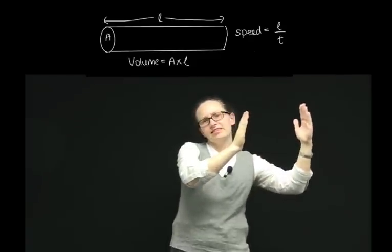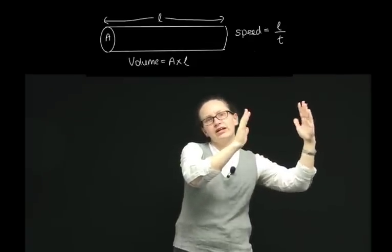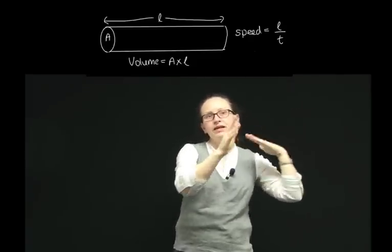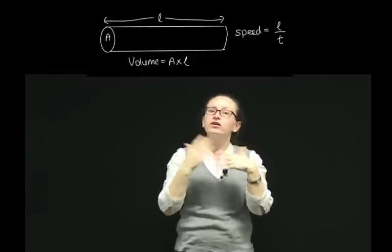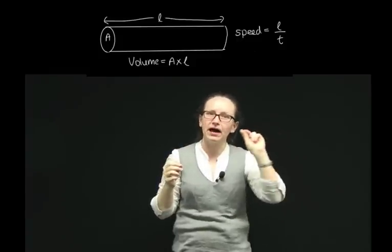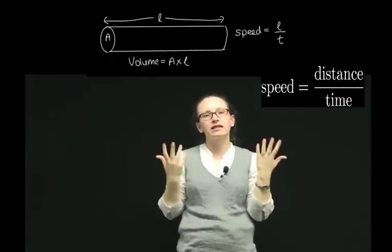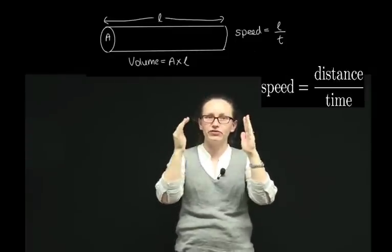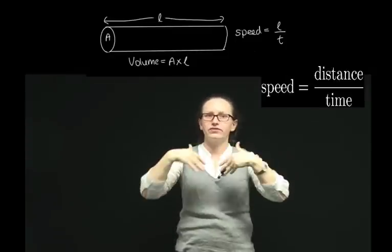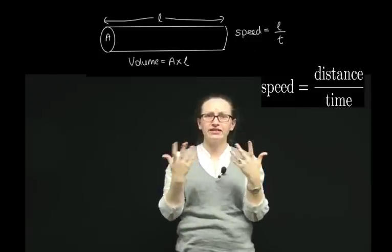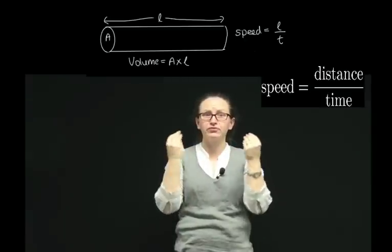Now the length that the water flows through over time is actually just the speed of the water through the pipe, because speed is just the distance travelled over the time. So we're going to give that the symbol v, v for speed.